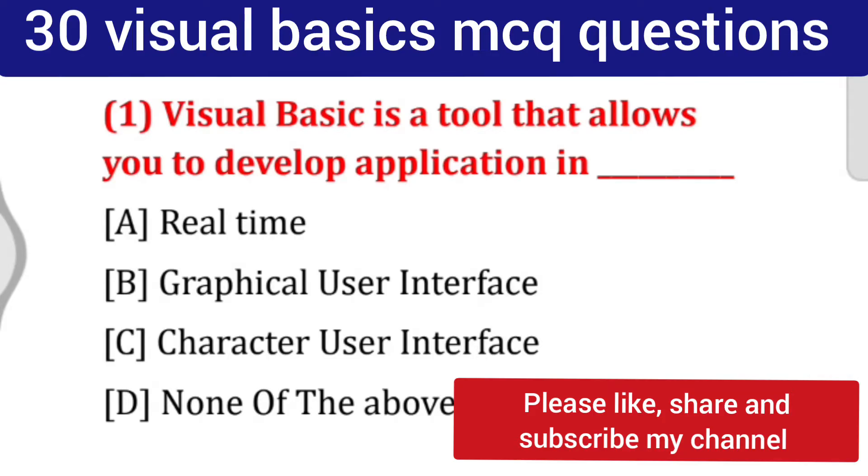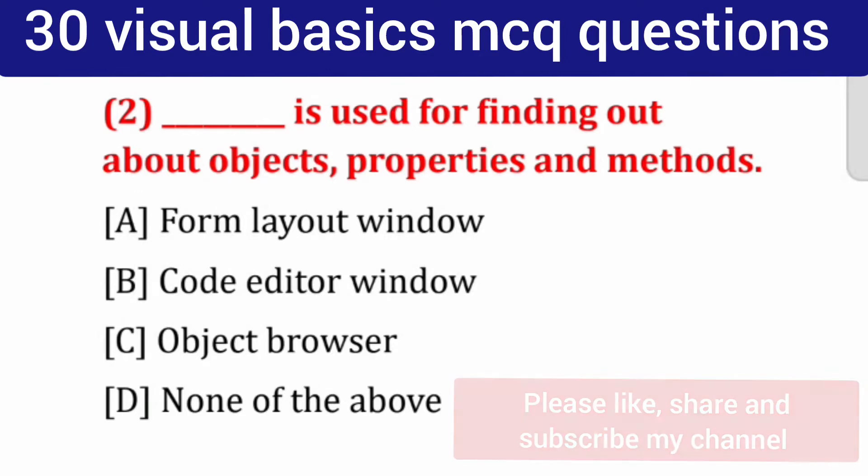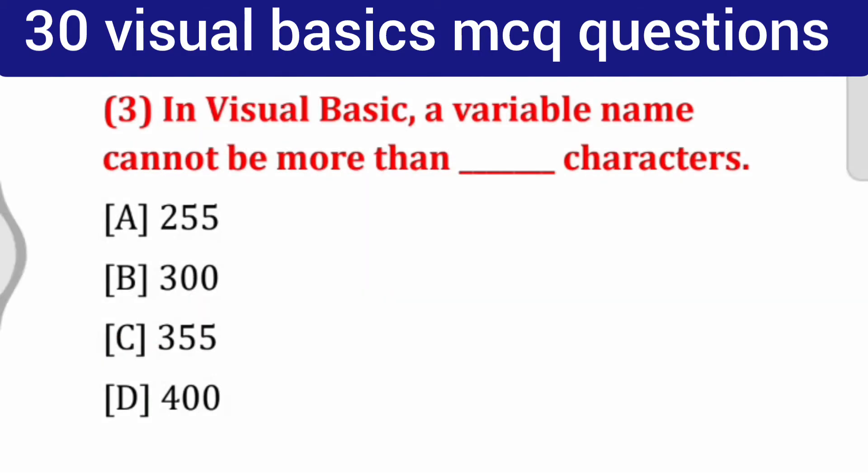Correct answer is graphical user interface. Question number 2: Which is used for finding out about objects properties and methods? Options: form layout window, code editor window, object browser, none of the above. Correct answer: object browser.